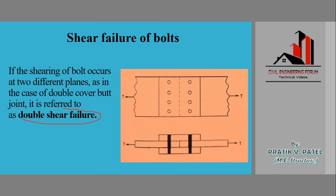Double shear failure occurs when the shearing of the bolt occurs at two different planes, as in the case of a double cover butt joint. Here there is no eccentricity, and the line of action of the force is on the same line, but the bolt may still fail in shear at two locations — this type of failure is known as double shear failure.